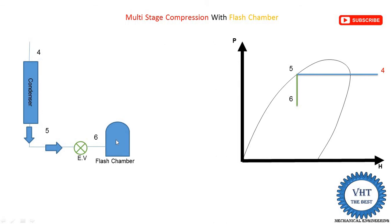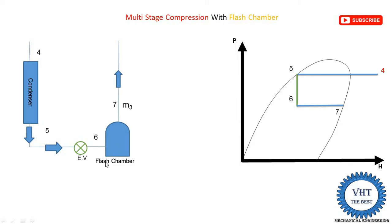At point six, the liquid-vapor mixture enters the flash chamber vessel. Vapor rises to the upper part of the flash chamber and is supplied between the two compressors at point seven. On the p-H diagram, the six-to-seven process moves rightward onto the vapor line. The liquid present in the flash chamber is supplied to another expansion device at point eight, which lies on the saturated liquid line.